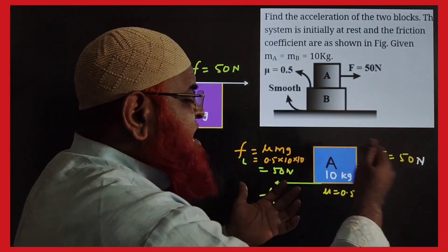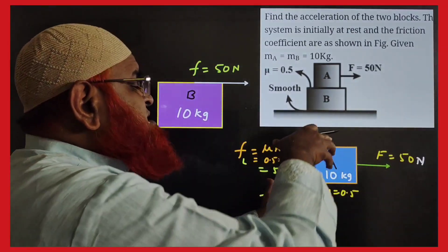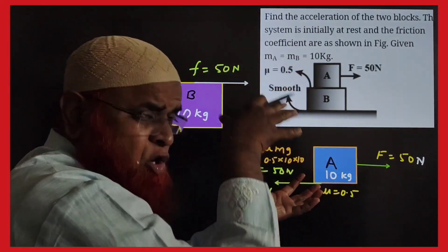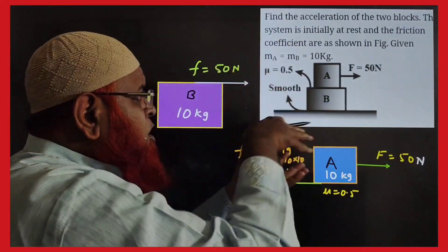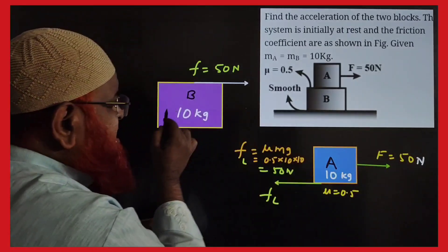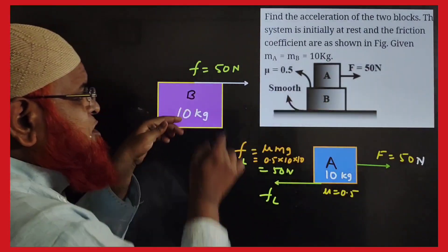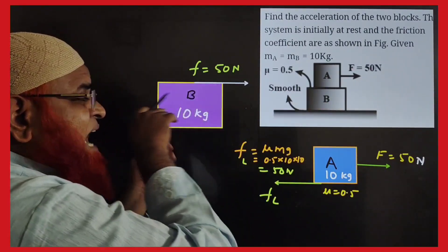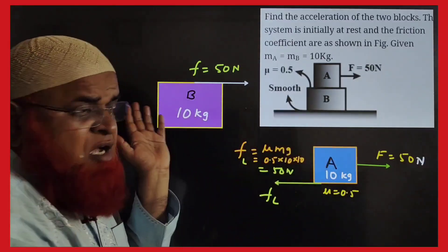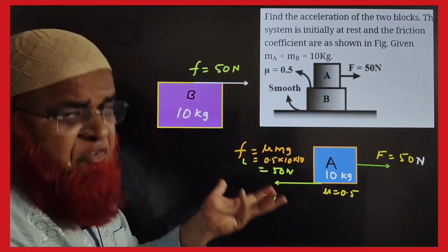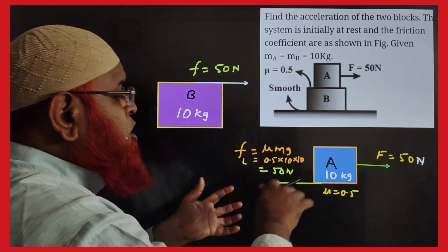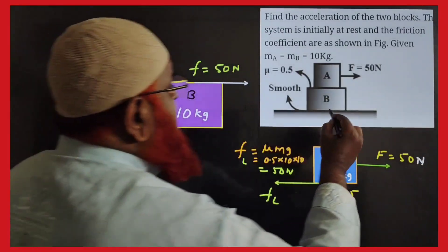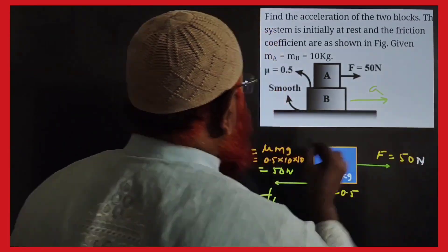As both forces are counterbalancing each other, the upper block is held exactly on the lower block such that both combine and move forward together. Taking the free body diagram of the lower mass, the friction acting on the left side acts like a driving force for the lower block. The driving force is 50 N, so both combined move forward with an acceleration.